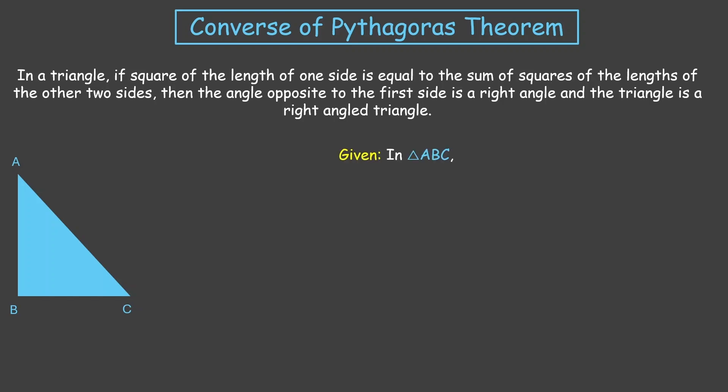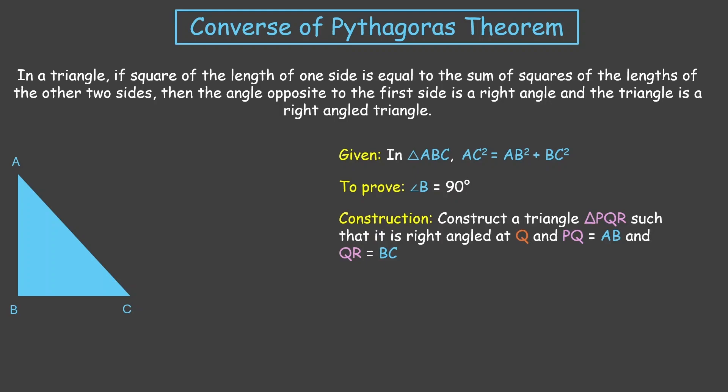So, what is given is triangle ABC where AC² equals AB² plus BC², and what we need to prove is that angle B is 90 degrees. Let us start by constructing a triangle PQR such that it is right-angled at Q, with PQ equal to AB and QR equal to BC.